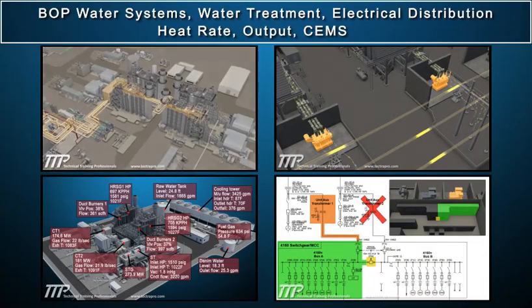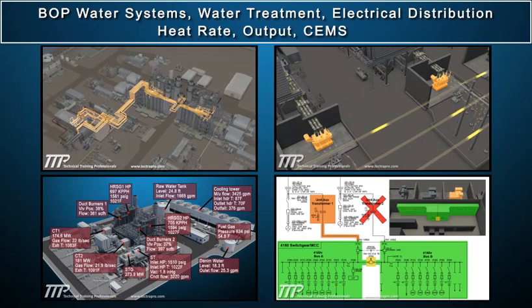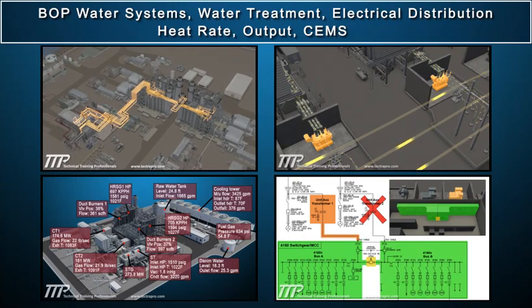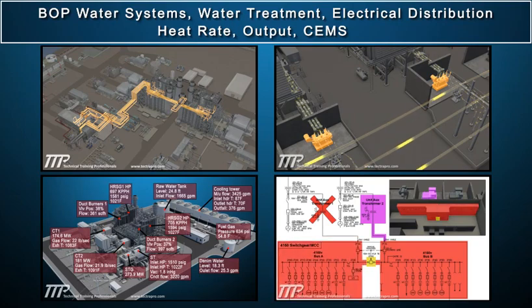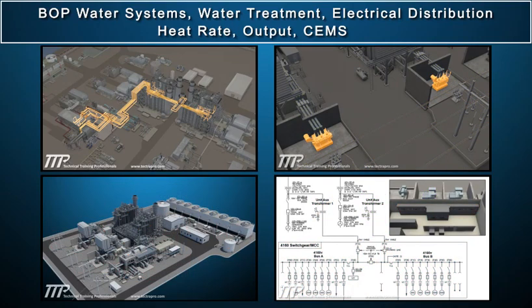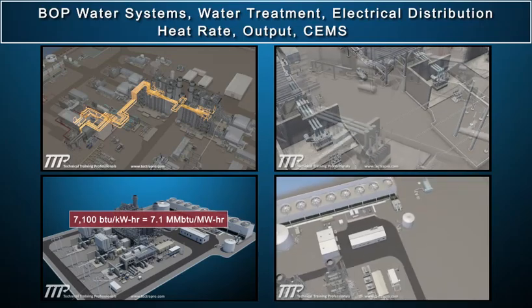The Combined Cycle Plant Operations section covers BOP water systems, water treatment, electrical distribution, heat rate, output, and SCEMS.